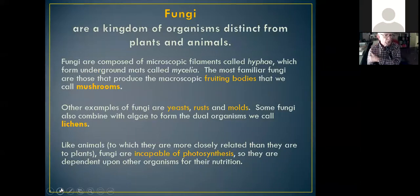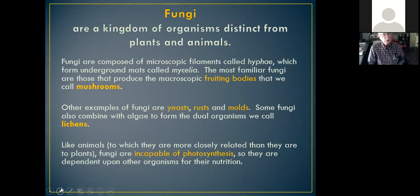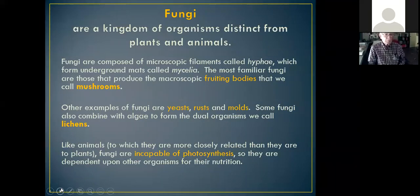Mushrooms are actually the fruit of these organisms that we call fungi. They are certainly not the entire organism — in fact, it's just like an apple on the tree. What you see when you pick a mushroom is just the fruit of an organism mostly underground, because fungi are composed of microscopic filaments matted together forming underground mats called mycelium, which is what mushroom growers call spawn.